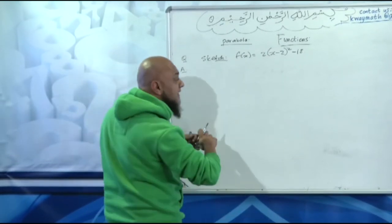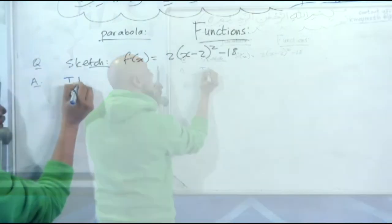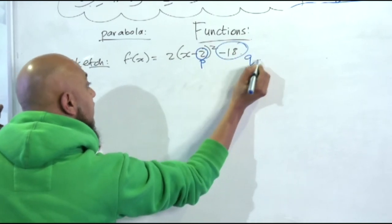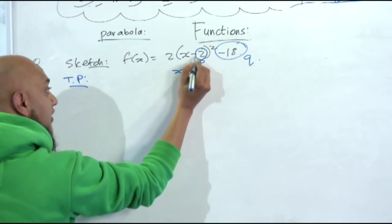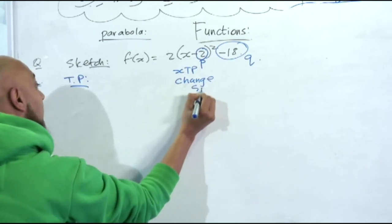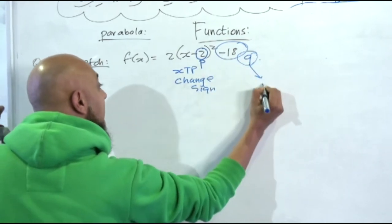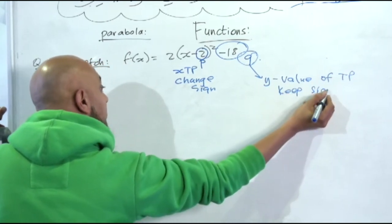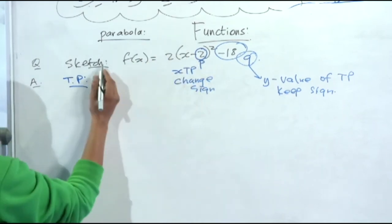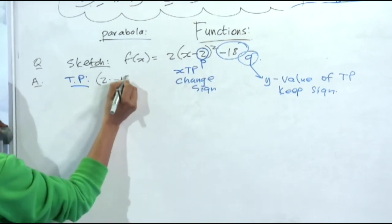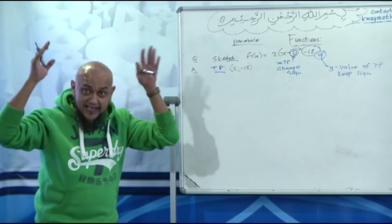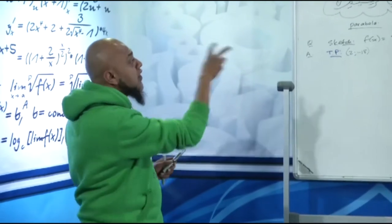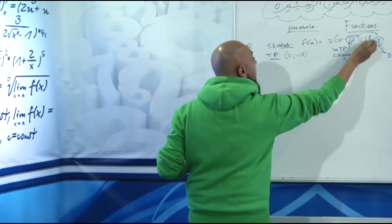This graph is worth about five or six marks. Step number one: take out your turning point. This p value gives the x-coordinate of the turning point — I change the sign of p. The q value, negative 18, is the y-coordinate of the turning point — I keep the sign. So from the equation directly, the turning point is (2, −18).